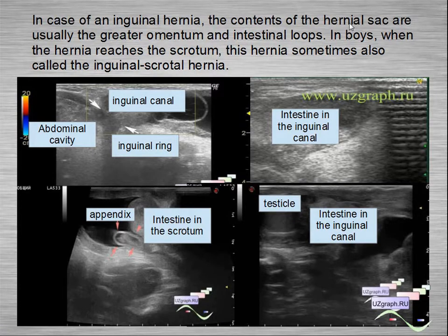In the case of inguinal hernia, the contents of the hernial sac are usually the greater omentum and intestinal loops. In boys the hernia reaches the scrotum, and is sometimes also called the inguinal-scrotal hernia.